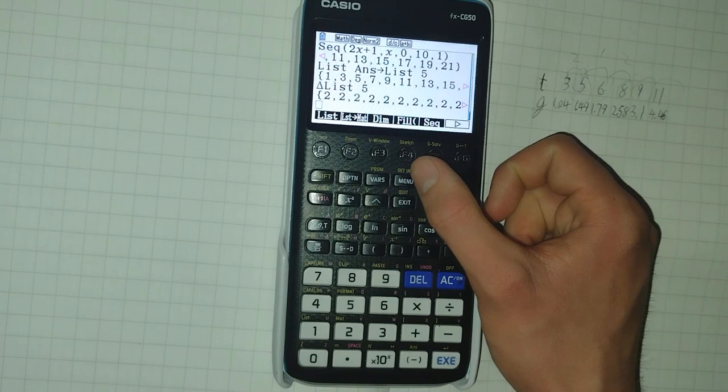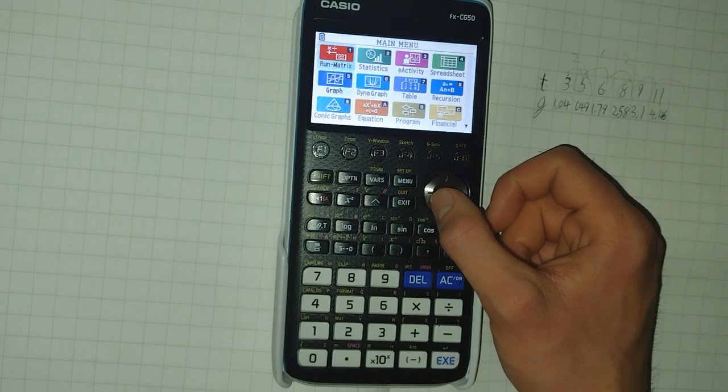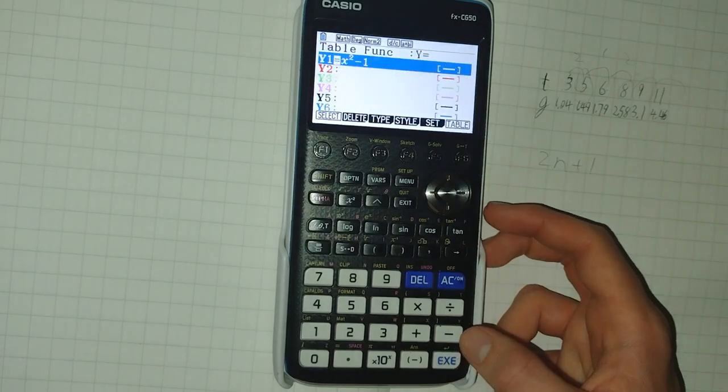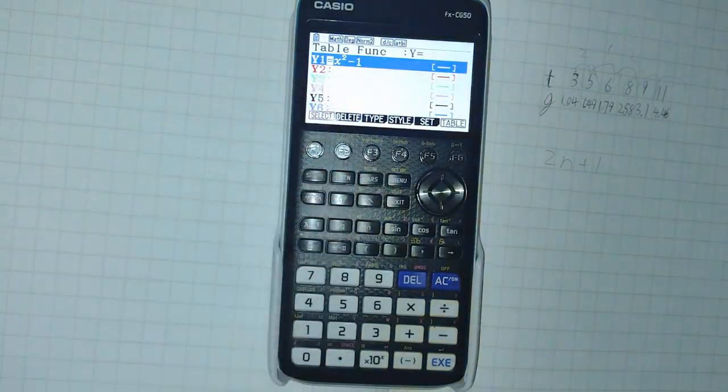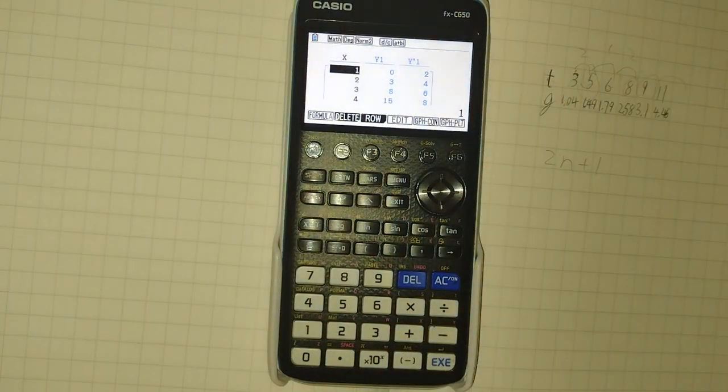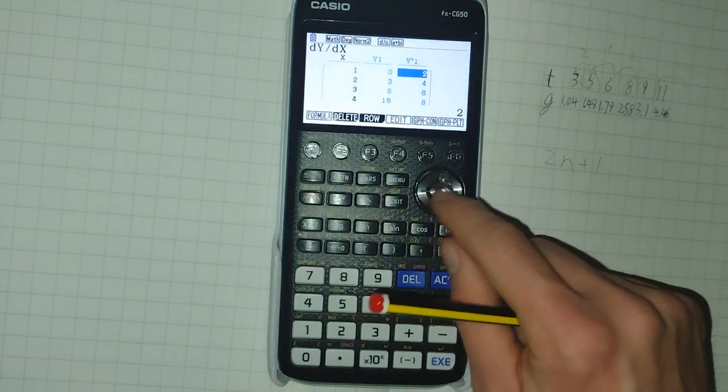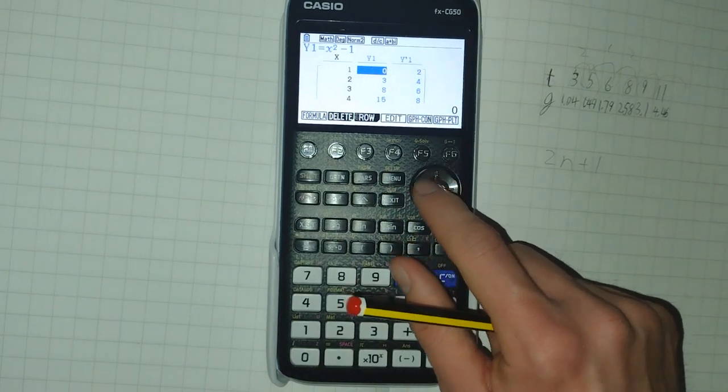There's another way that we can define a list as a sequence. And to do that, we must go to table mode, number seven. Here, I've already got a function inputted. X squared minus one. We click F6 for table. And it gives us all of the values. It also gives us the rate of change. But we're not interested in that. We just want this one.